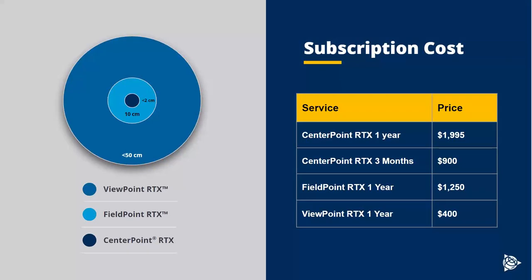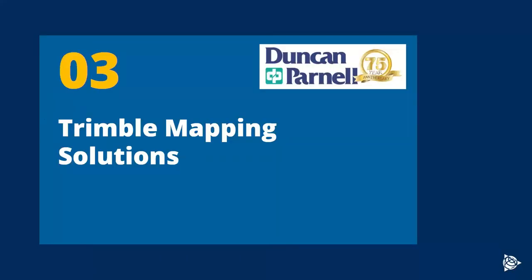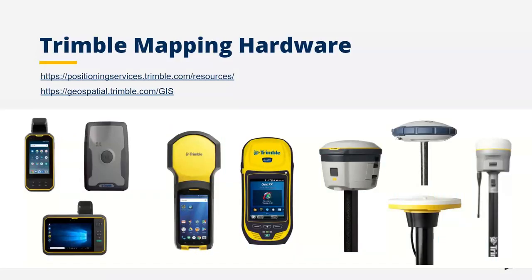Here's another overview of our services. The highest level of accuracy — the smaller circle in this bullseye chart — means more accuracy at a higher cost. Here's a breakdown of our costs. I'll continue talking about the fuller mapping and GIS solution and how RTX integrates into that.